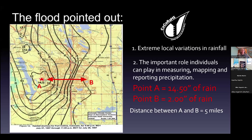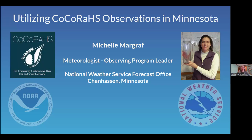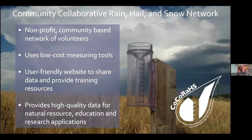Thank you so much. I really appreciate joining you today to share information about the CoCoRaHS network. I'm located in the Twin Cities of Minneapolis-St. Paul, working for the National Weather Service at the Forecast office. Today I want to talk about an overview of what CoCoRaHS is and the types of observations available. CoCoRaHS is the Community Collaborative Rain, Hail, and Snow Network. It's a nonprofit organization with volunteers across the country who use low-cost measuring tools to share precipitation, snow, and other information through a user-friendly website.